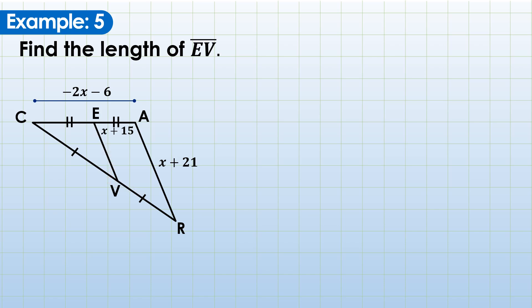So we are looking for the length of EV. Let's analyze the figure. We have the triangle CAR. And based on the markings, it appears that EV is a midline. And it follows that since this is the midline, AR is the third side. And we can use EV and AR to formulate an equation following the midline theorem. But the problem is EV has no given measure. What we have is this segment and the side CA. You could see also that if you know the exact measure of AR, you would also know the exact measure of EV by taking the half of x plus 21.